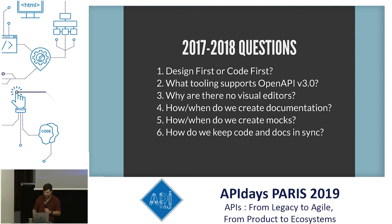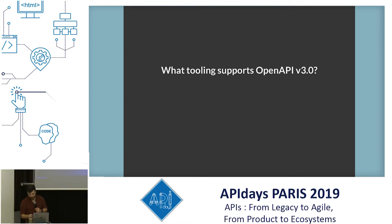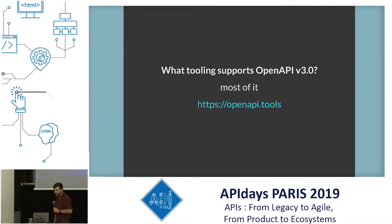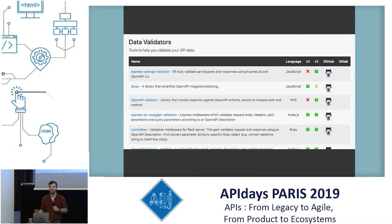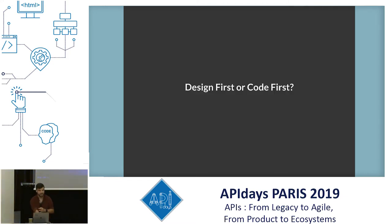It's solved. I got the answer. Which tooling supports OpenAPI 3? Basically all of it — most of it. If you go to OpenAPI.tools, there is a whole list of stuff. It will say version 2 support, meh, version 3 — most things actually support version 3. More things support v3 than v2 now, so we're in a pretty good state. So that's easy. Solved.